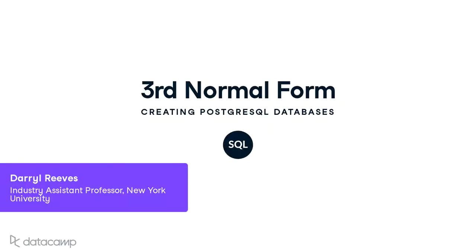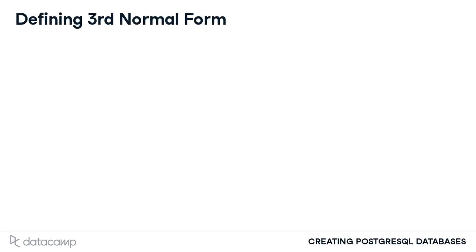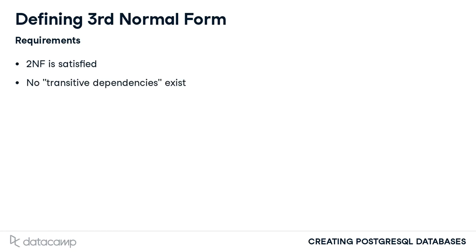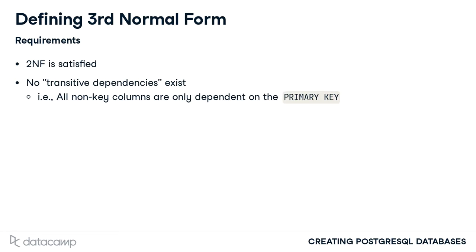It is now time to discuss the third and final step in the process of normalizing databases that will be taught in this course. To satisfy third normal form, we must first satisfy the requirements of second normal form. Third normal form has an additional requirement that no transitive dependencies are present in the table. This means that non-key columns are solely dependent on the table primary key.